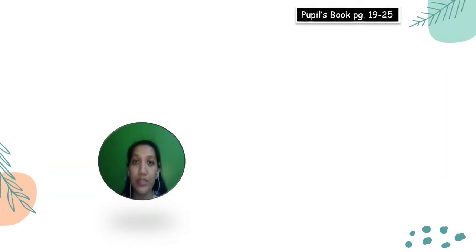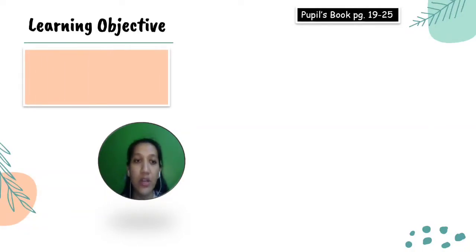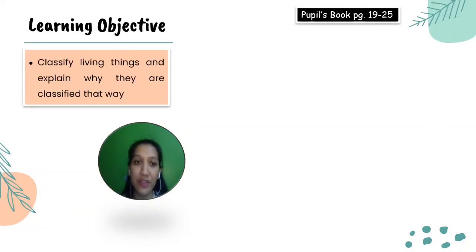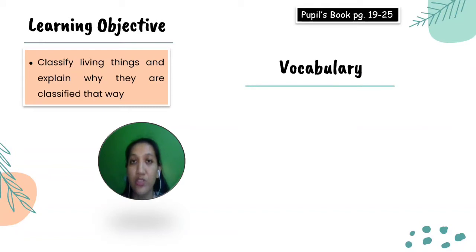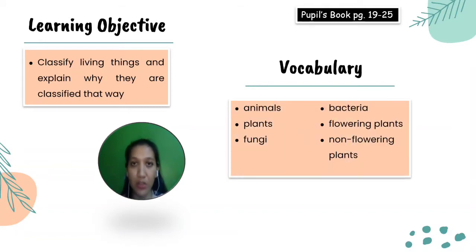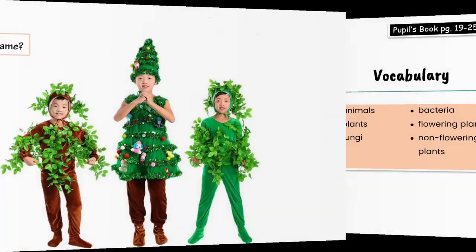You can open your pupil's book pages 19 to 25. The learning objective for this topic is: students will classify living things and explain why they are classified that way. In this topic you also learn vocabulary such as animals, plants, fungi, bacteria, flowering plants, and non-flowering plants.